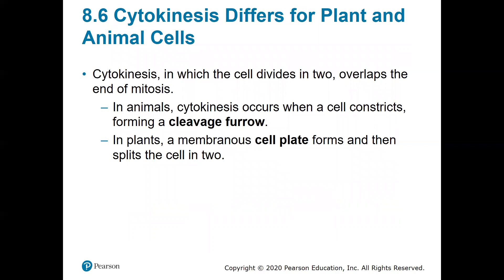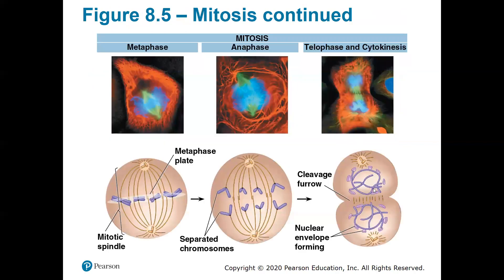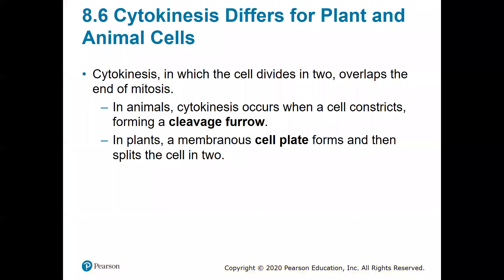Cytokinesis also goes along with telophase. Telophase is looking at what is happening to the DNA — the DNA has fully separated, the two sets of sister chromatids are fully separated, and the nuclear envelope is starting to reform. Cytokinesis is the actual separation of the cells — where the cell will completely divide in two. Depending on whether you are an animal or a plant, there are different ways cytokinesis occurs. In an animal cell, it undergoes what we call a cleavage furrow. In a plant cell, you have to have a cell plate form to split those cells in two.